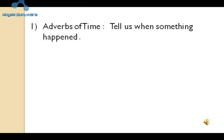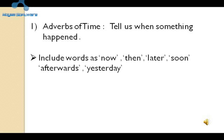Adverbs of time क्या होते हैं? Adverbs of time tell us when something happened. जब भी कुछ हो जाता है, तो उसके बारे में जानकारी देने के लिए adverbs of time आते हैं। इसमें now, then, later, soon, afterwards, yesterday ऐसे शब्दों का प्रयोग होता है। ऐसे शब्द दिखें तो आप समझ लेना कि ये adverbs of time को indicate करते हैं।